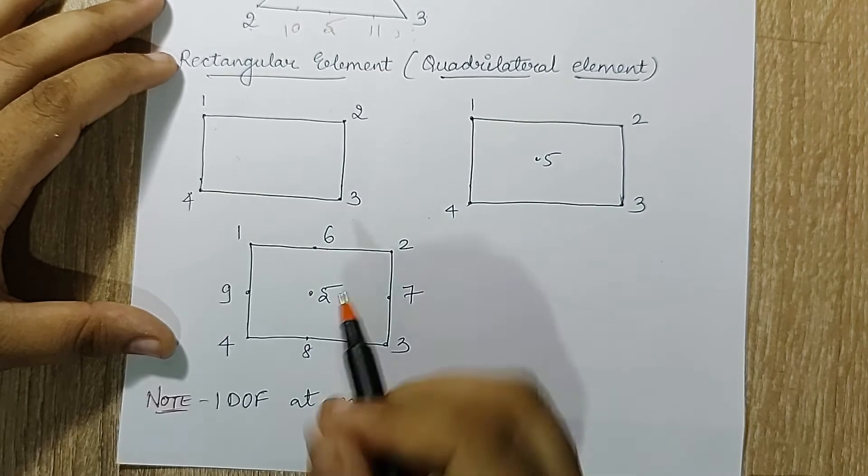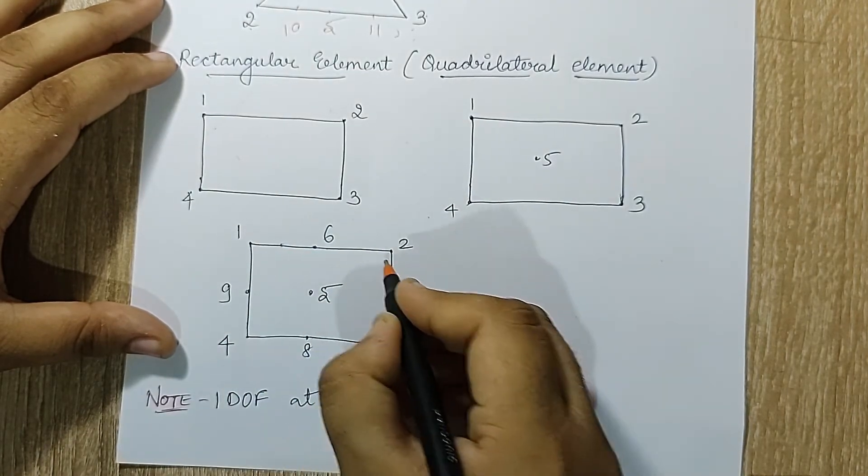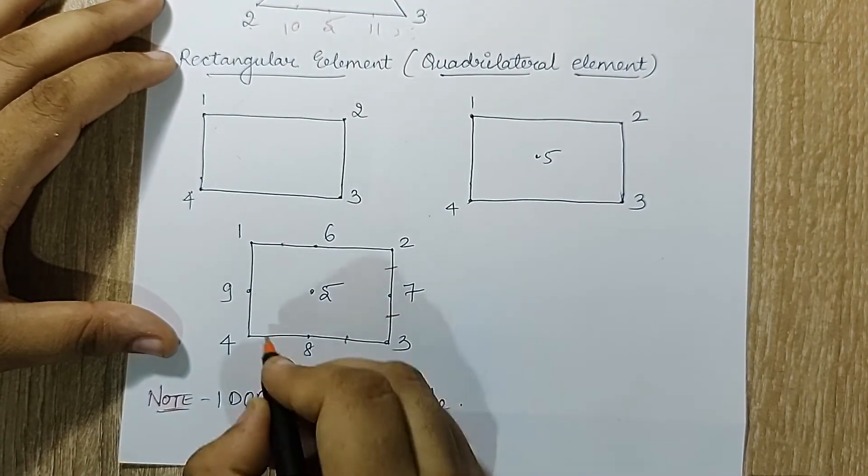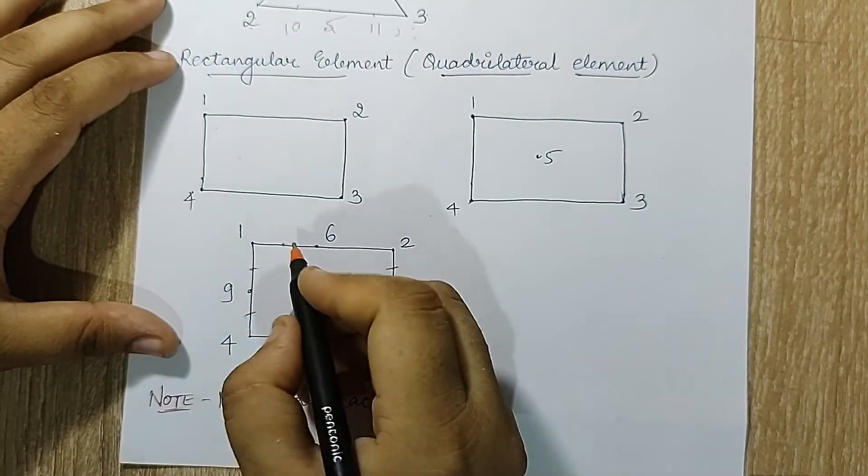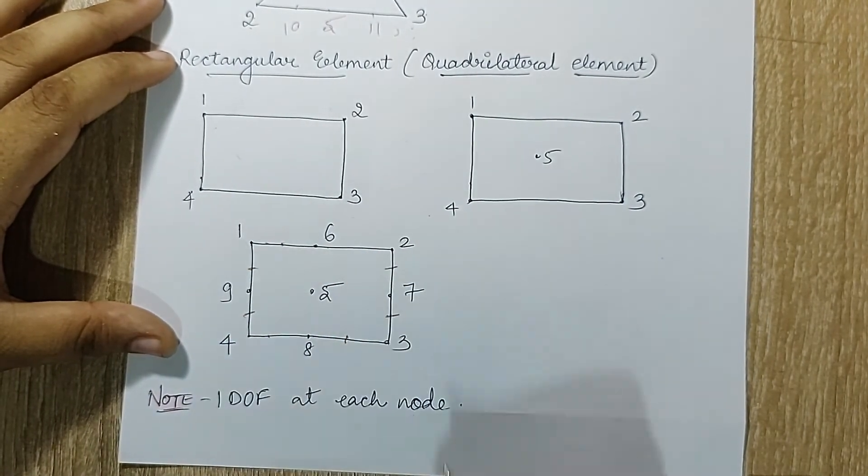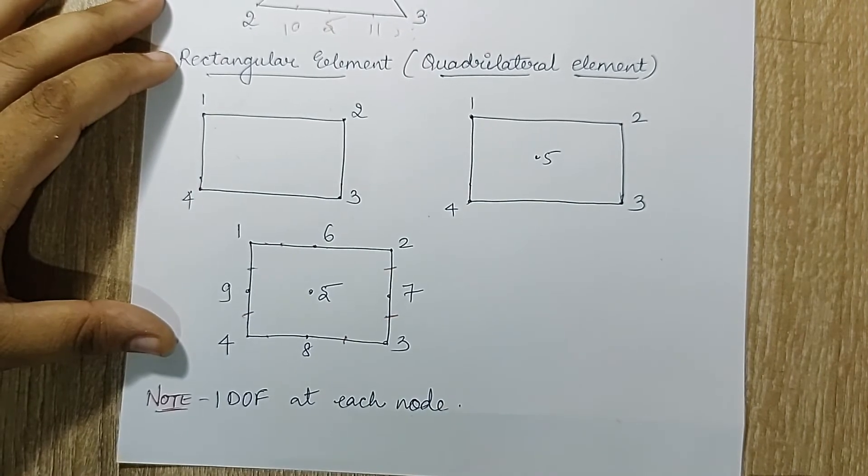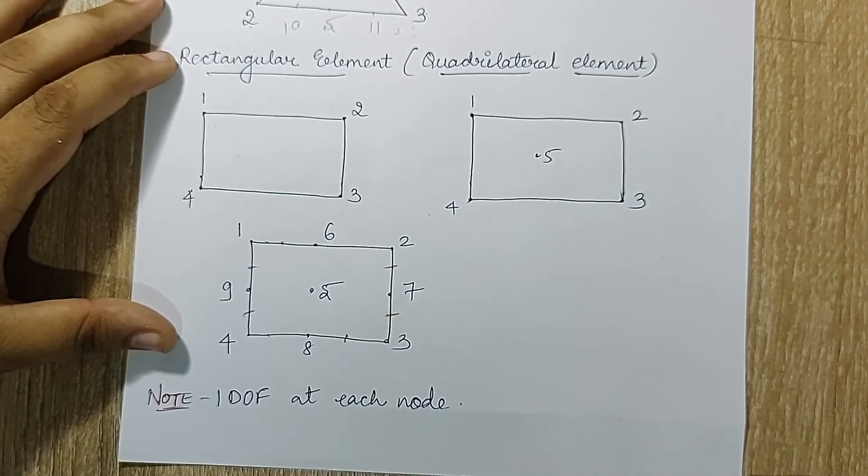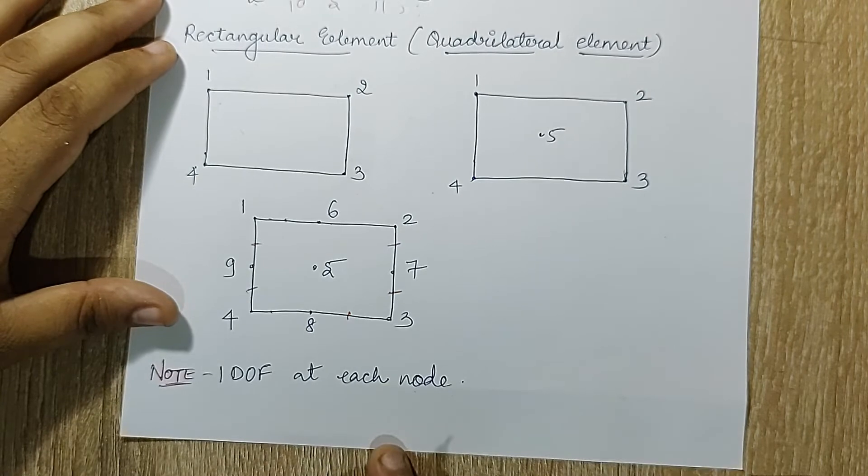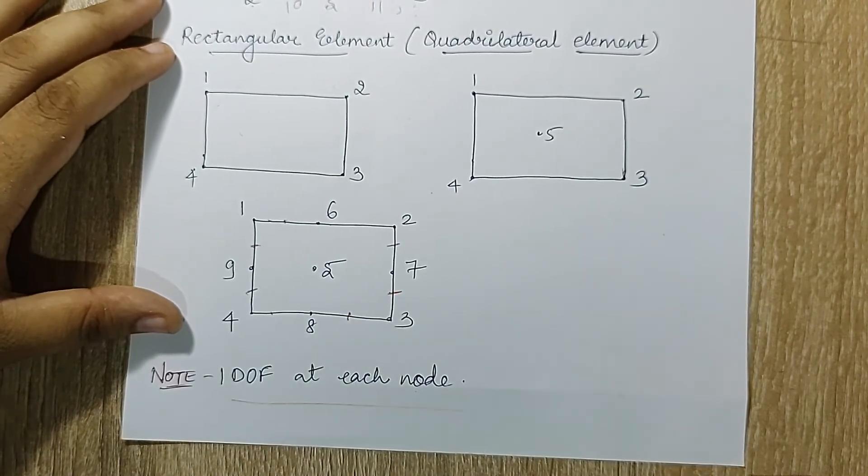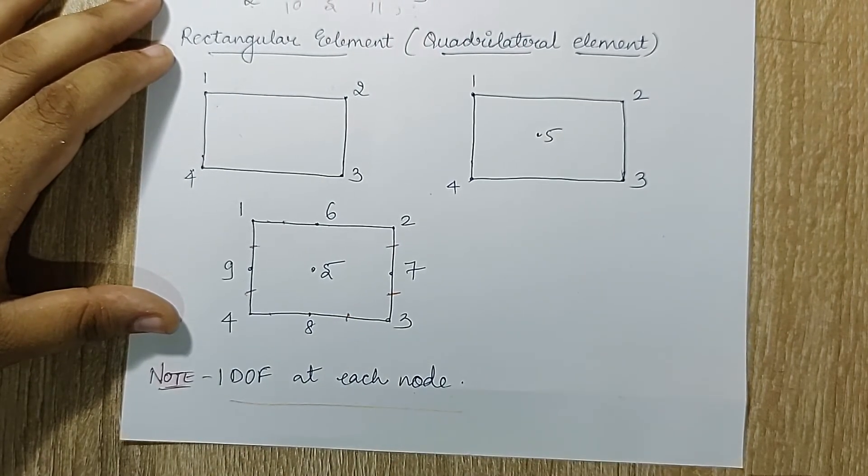If you want, add four nodes: ten, eleven, twelve, thirteen, fourteen, fifteen, sixteen, seventeen. You want more? Add between these two. You can just keep on adding n number of nodes that you want just to make your solution better. At the end, I have written the same line which I told you: one degree of freedom at each node is what is meant by 1D element.